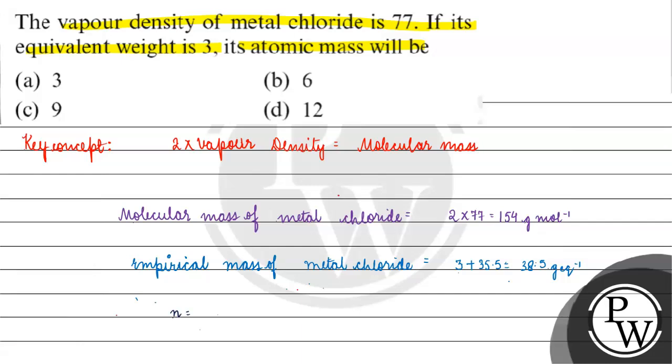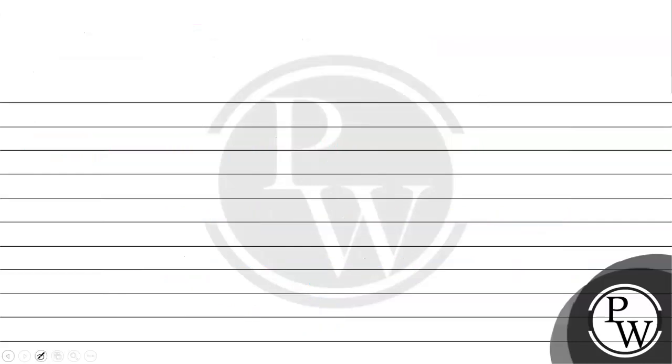N is basically equals to molecular mass divided by empirical mass. This will come out to be 4.